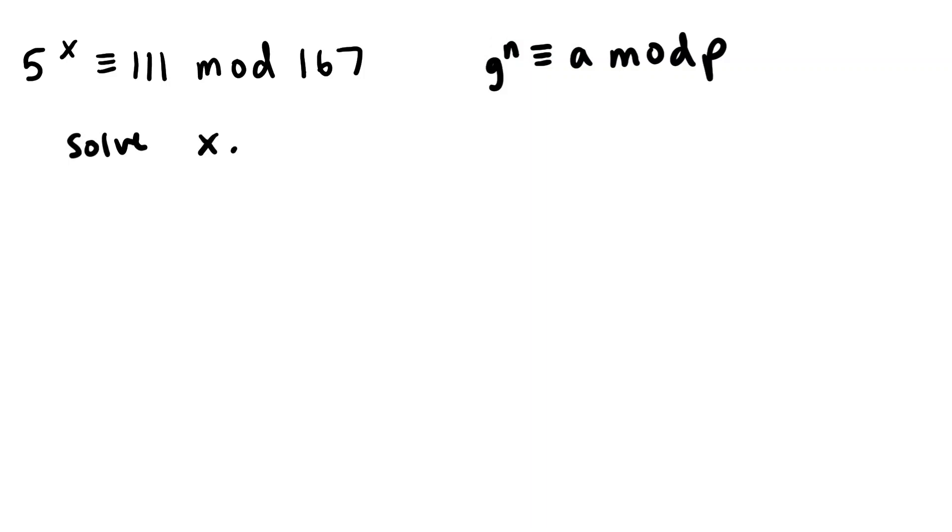And we can go ahead and name our variables. So a in our case is 111, g is 5, and p is 167. So these are our variables.